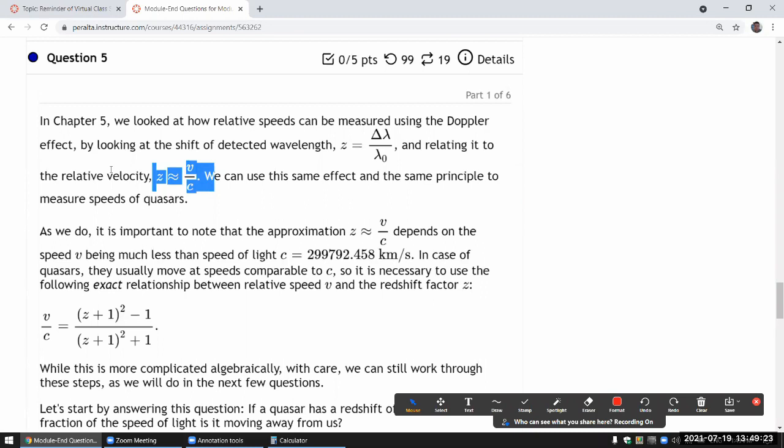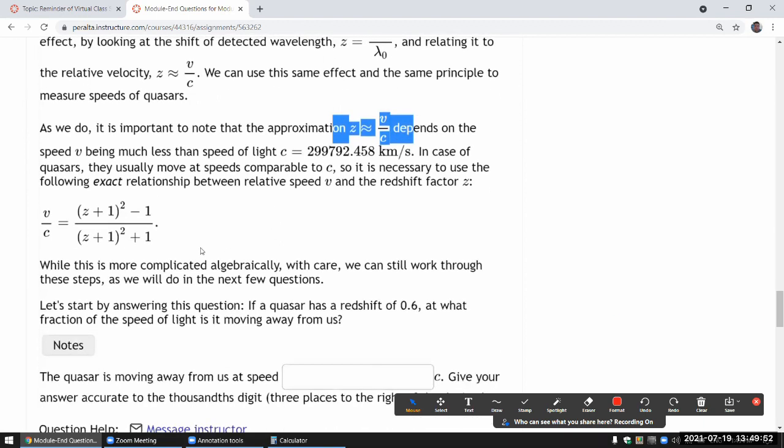It's an approximation that is not good for the context of Chapter 27, quasars. Quasars are so far away, they are moving so fast according to Hubble's law, that they are moving at a speed that's quite comparable to speed of light. So if you continue to use this approximate formula, then it doesn't work. So you need to use this exact relationship, which is a bit of a beast of a formula.